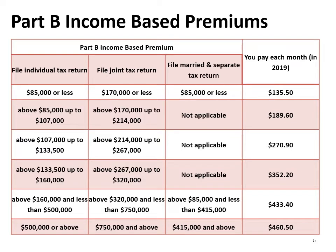When you enroll in Part A and Part B, you must pay a Part B premium. Your Part B premium is based on your adjusted gross income from your previous two-year return. For 2019, it is based on your 2017 adjusted gross income. The standard Part B premium for someone new to Medicare in 2019 is $135.50 or higher depending on income. For those already on Medicare, the basic Part B premium is $109 each month.